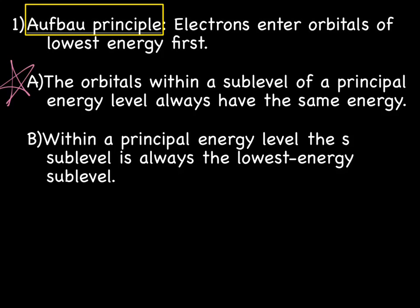Within a principal energy level, the s sublevel is always the lowest energy sublevel. So just like with the energy levels, the lowest energy is one, the second lowest energy level is two, and three, and so forth. Sublevels also have a hierarchy of energy. So s sublevel has the lowest energy, and then the p, and then the d, and then the f. So that's Aufbau's principle.